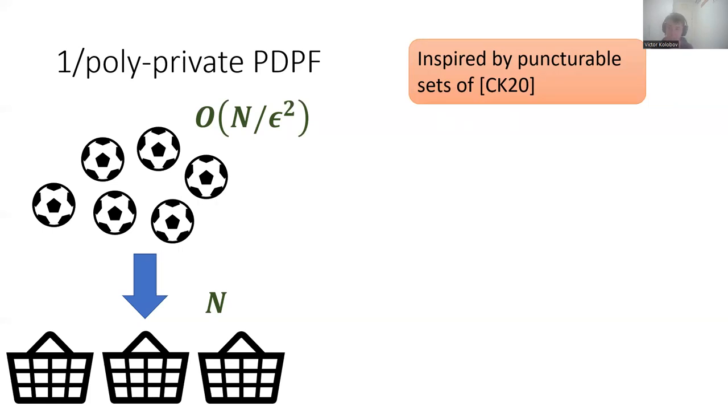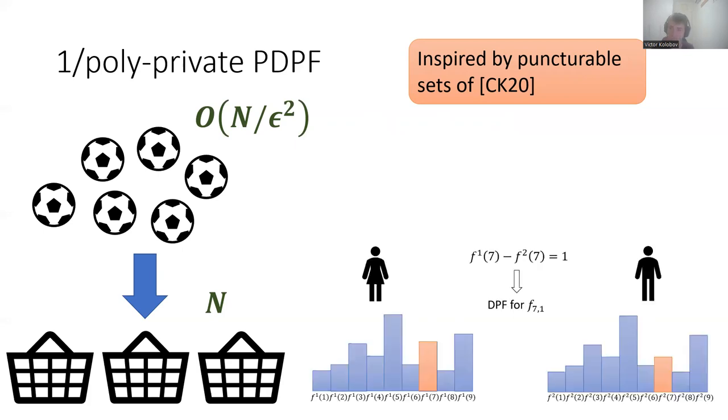And this gives us a histogram, and this histogram corresponds to the truth table of the offline function share. This we give to Alice, to the first party. To generate the online key, we remove one ball from one of the bins, the bin with index alpha, and give this histogram to the second party.